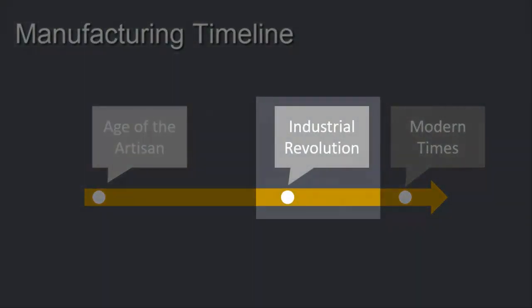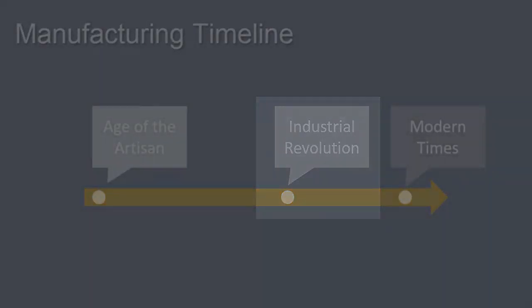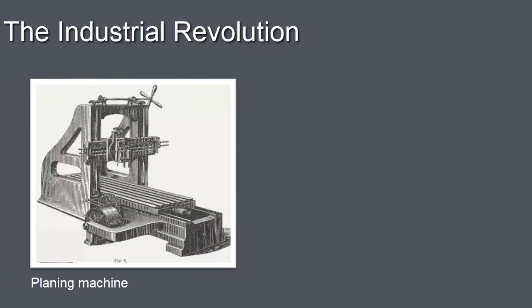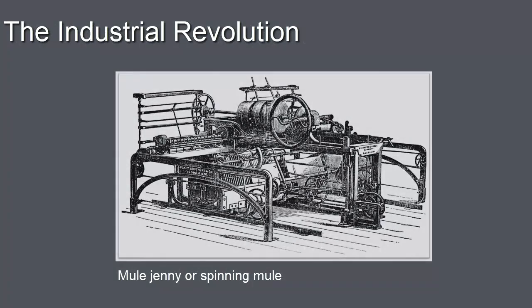Manufacturing changed significantly during the Industrial Revolution, which began in England in the 18th century and lasted until around 1840. Instead of workers producing items by hand, machines were created that produced items much faster and with much less human effort. For example, this mule jenny, or spinning mule, allowed a single worker to produce high-quality thread much faster than was previously possible.